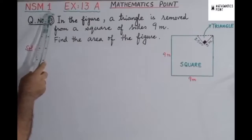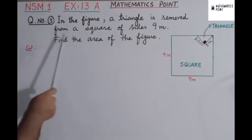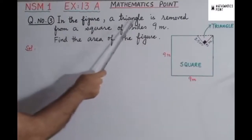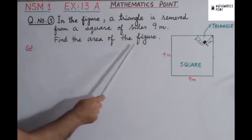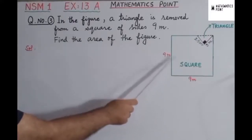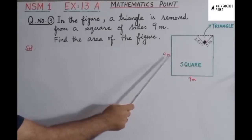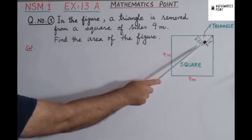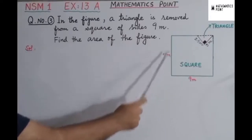From the New Syllabus Mathematics Book 1. If you look at the statement of this question — in the figure, a triangle is removed from a square of sides 9 meters. Find the area of the figure. So if you look at the figure, a square is given of length 9 meters, and you can see on the right top corner of the square a right angle is given, and we have to remove this triangle from this square.